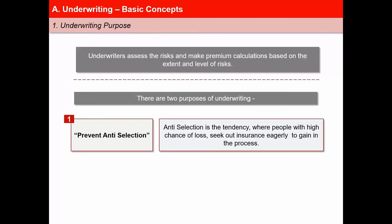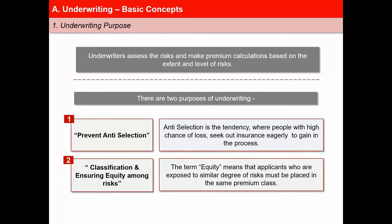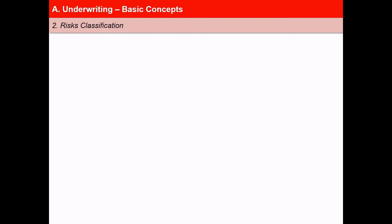And second is to classify risks and ensure equity among risks. The term equity means that applicants who are exposed to a similar degree of risks must be placed in the same premium class. Life insurers use a mortality table to determine the premiums to be charged. To assure equity, the underwriter engages in a process known as risk classification — individual lives are categorized and assigned to different risk classes depending on the degree of risks they pose.